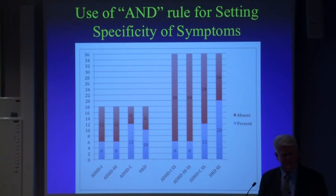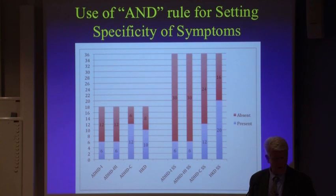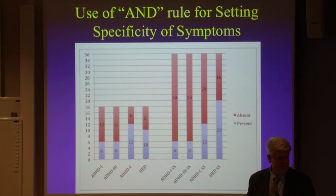It's very interesting that ICD-10 is actually more rigorous than DSM-4 for diagnosis. But how many people know that you actually have to have fewer symptoms to meet the criteria for ICD-10 compared to DSM-4? So why is it more rigorous?